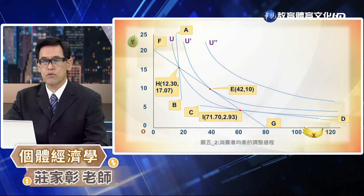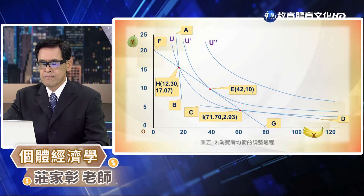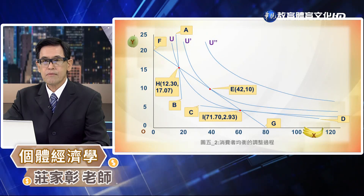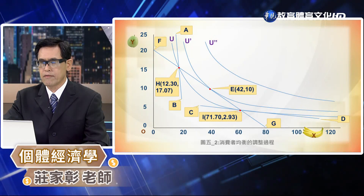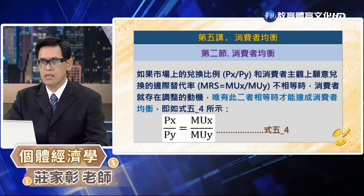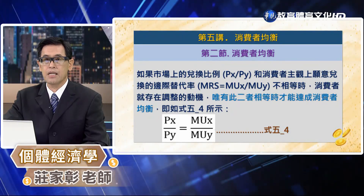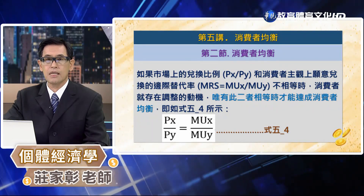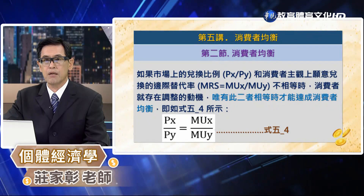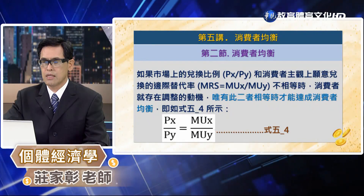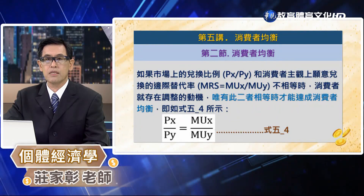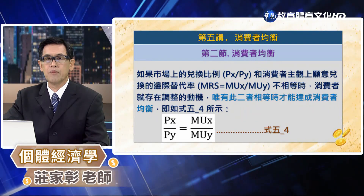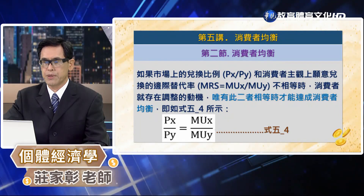最後的均衡點會出現在 E 點。從消費組合點 H 跟 I 的移動方向我們也可以了解到，客觀上市場的兌換比例 Px/Py 和消費者主觀上愿意兌換的邊際替代比例 MUx/MUy 不相等的時候，消費者就存在調整的動機，唯有兩者相等的時候才能達到消費者均衡，如公式4-5-4：MUx/MUy = Px/Py。